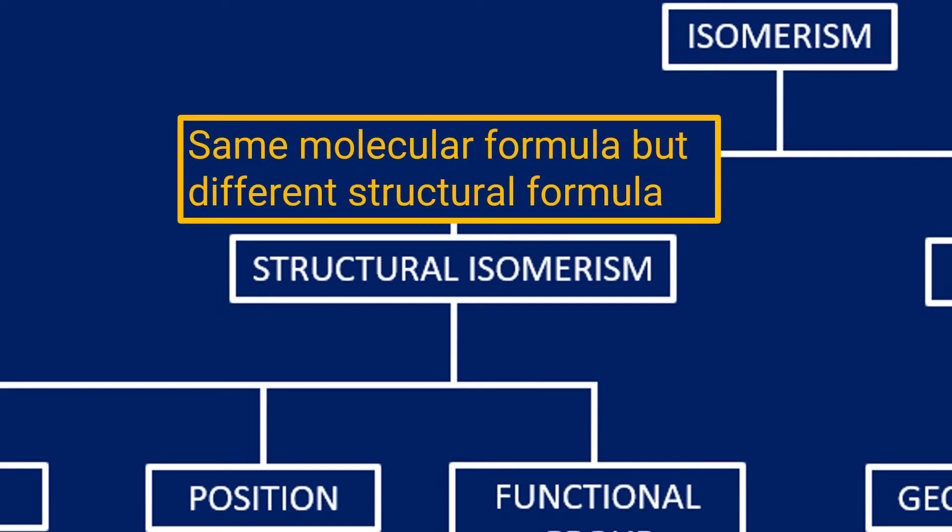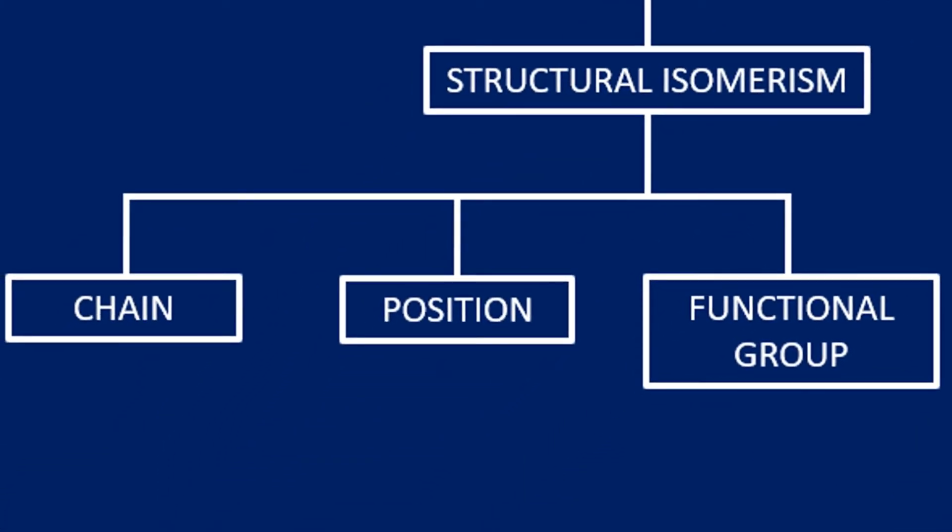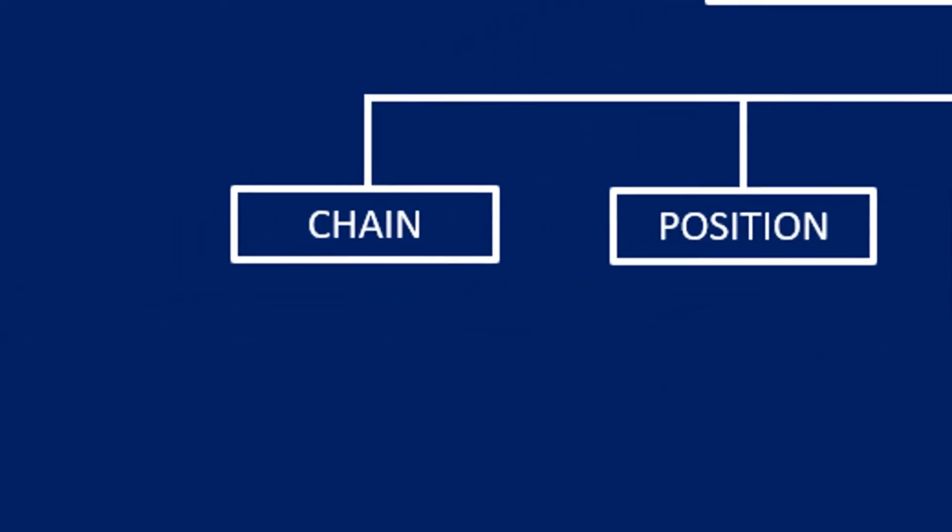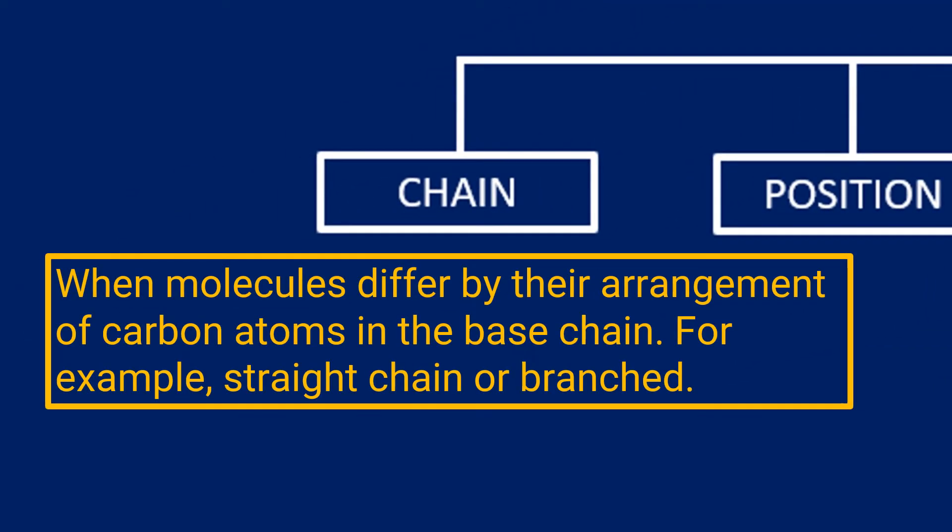Let's move across to structural isomerism then. Structural isomerism means they have the same molecular formula but a different structural formula. The three subgroups of structural formula then—we have chain isomerism.